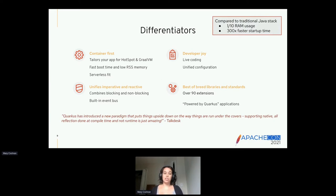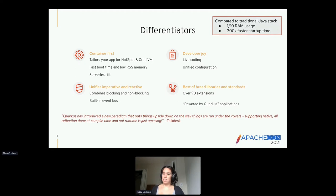For example, with a dependency like Hibernate in a traditional Maven project, it needs to know about all different databases — MySQL, Postgres, etc. When compiled to native, it can strip out all the pieces it doesn't need. It sees that the application is only using Hibernate for MySQL, so it removes everything else, leading to a smaller footprint.